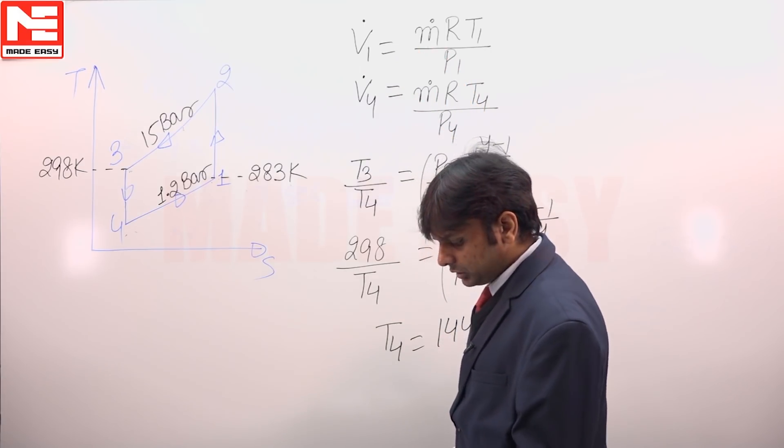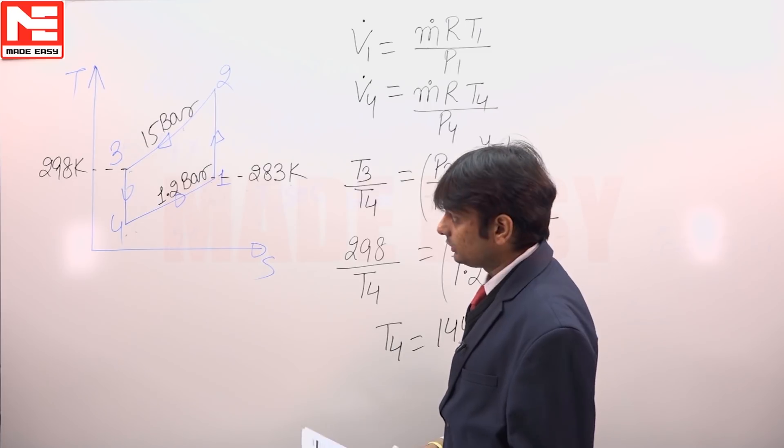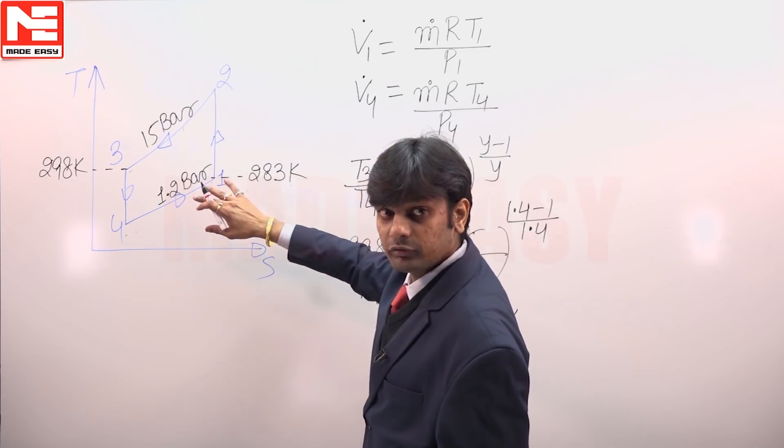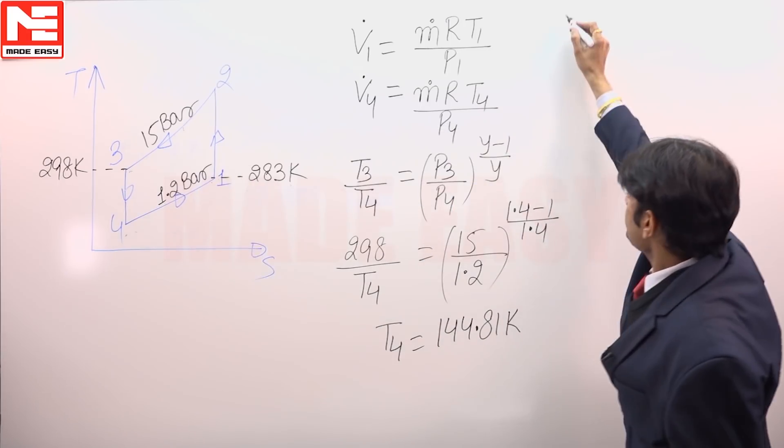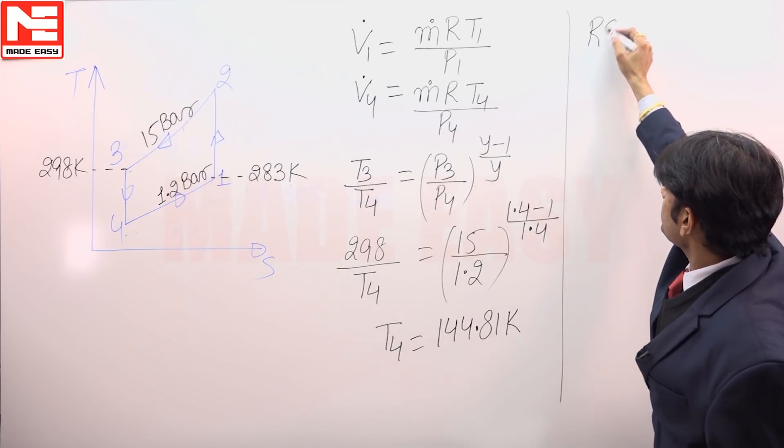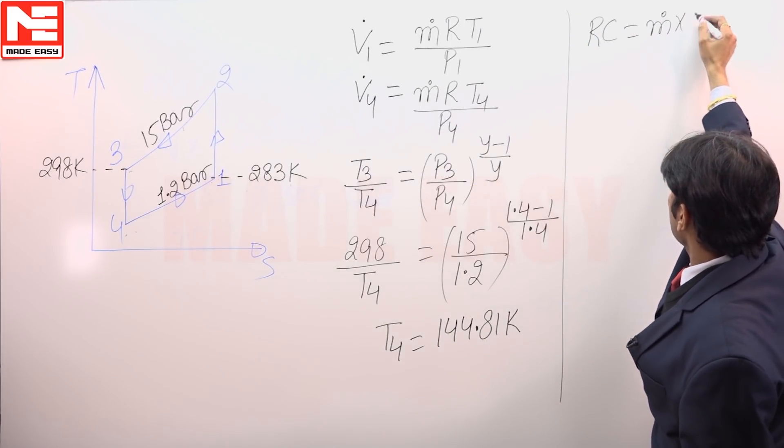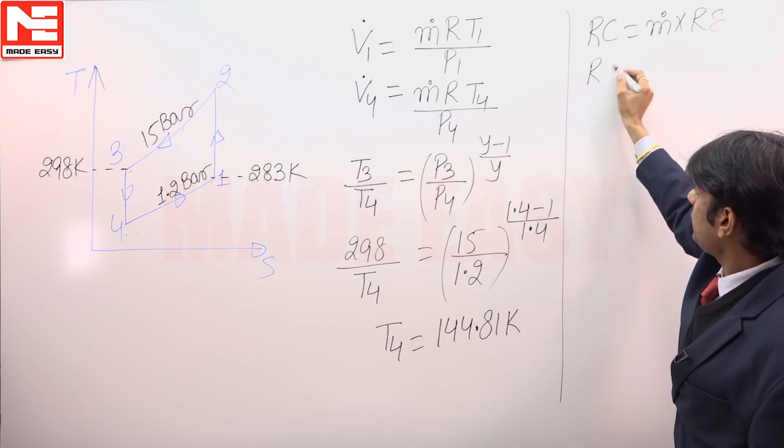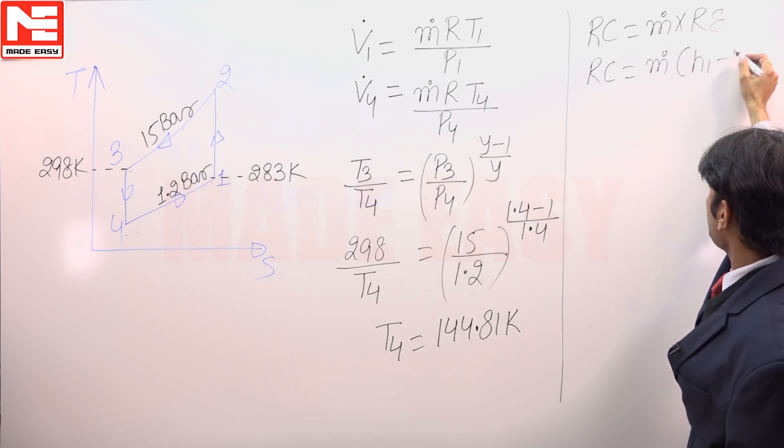The cooling load is given as 50 kilowatt. With the help of this RC, we will get the values of mass flow rate. RC is equal to M dot into RE.